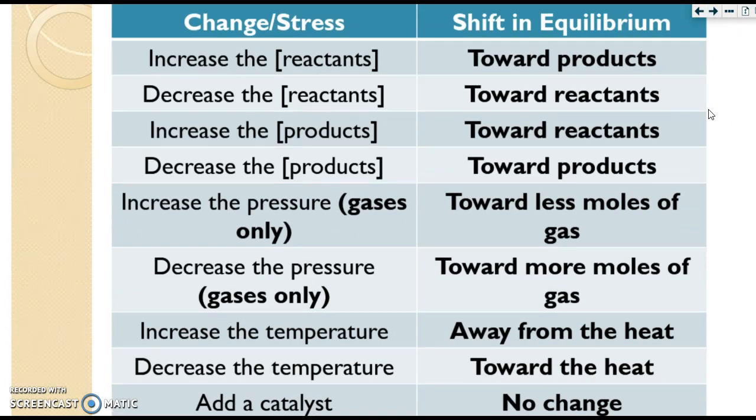If you increase the reactants, you would shift towards the products. If you do the opposite, you go towards the reactants. The same is true for increasing and decreasing the products. If you increase the pressure or decrease the pressure. Notice this says gases only. You're going to, if you're increasing pressure, you go towards less moles of gas. If you're decreasing pressure, you go towards more moles of gas.